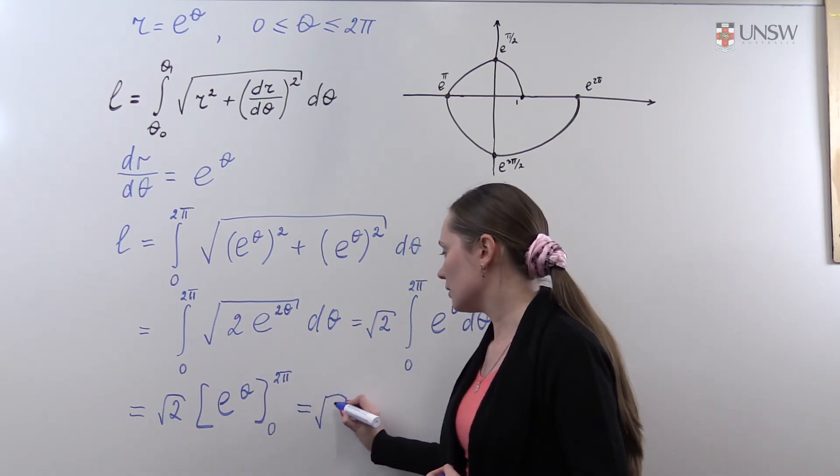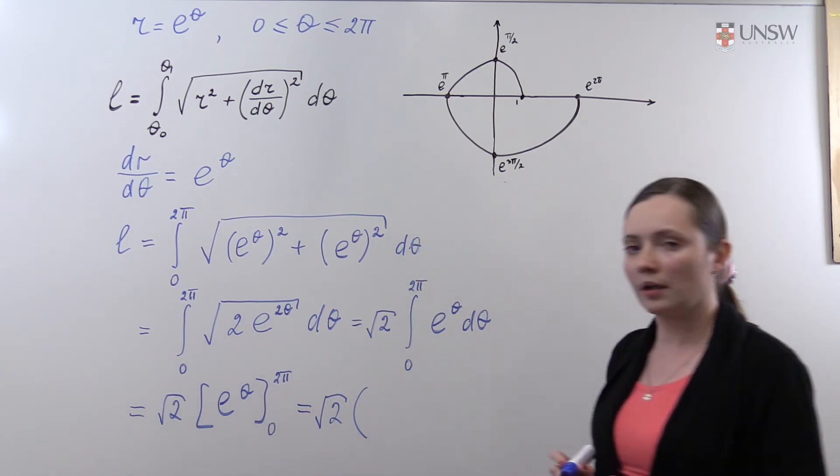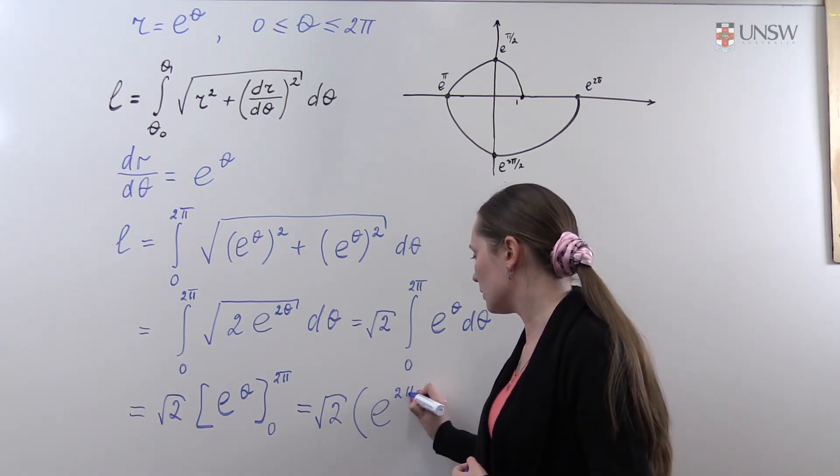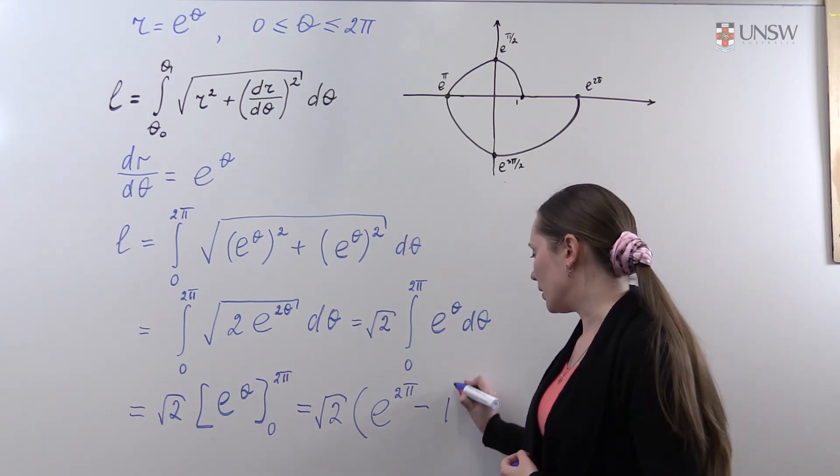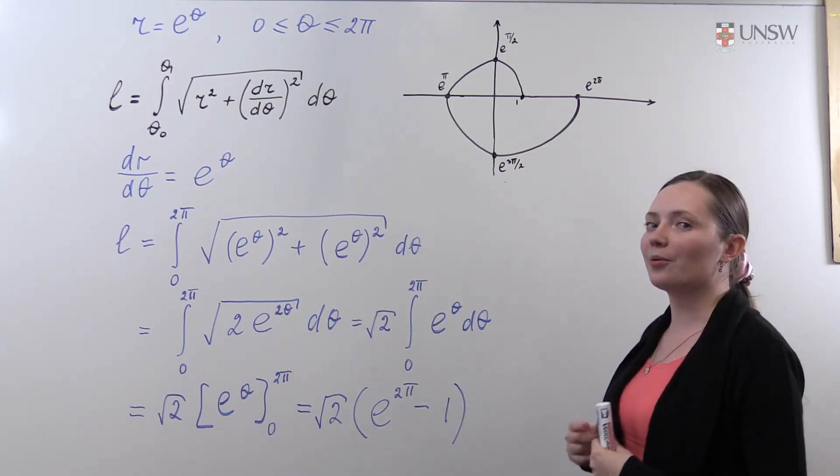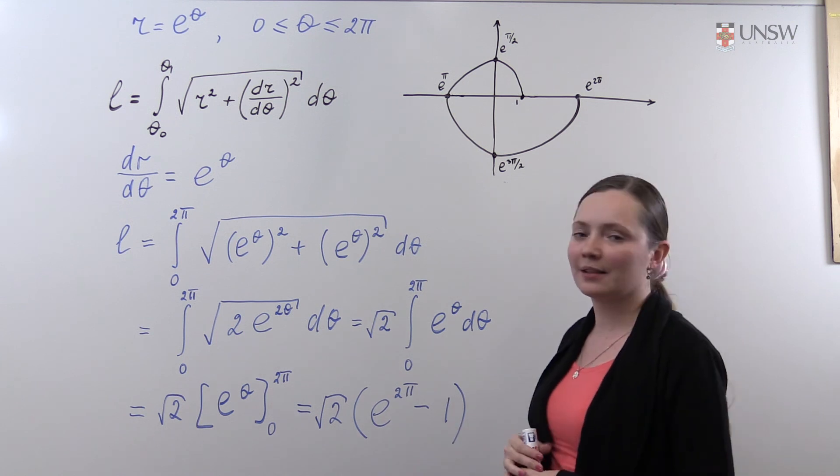So substituting 2π and 0, we obtain e to the 2π minus e to the 0, which is just 1. So the length of this curve is this.